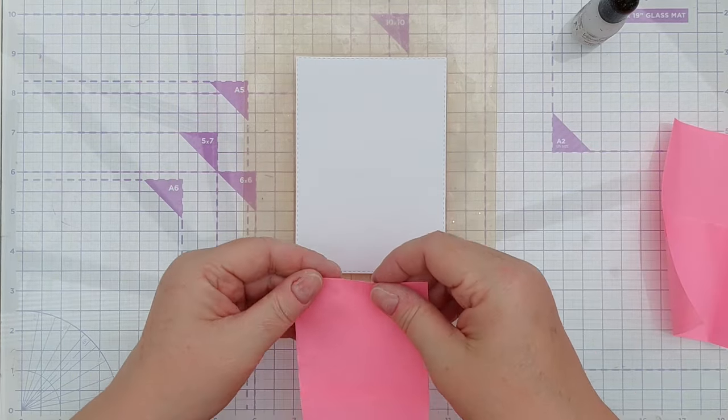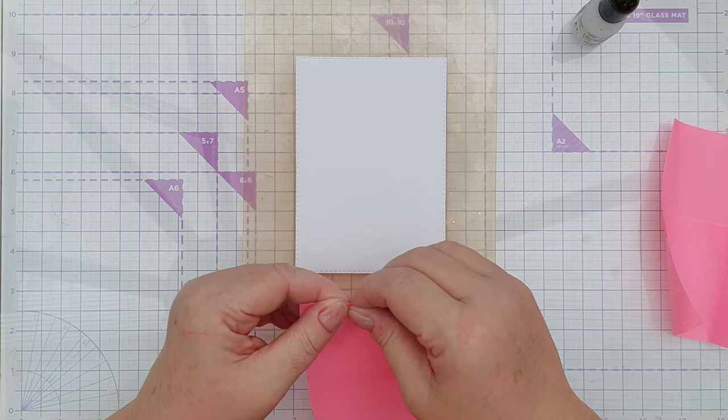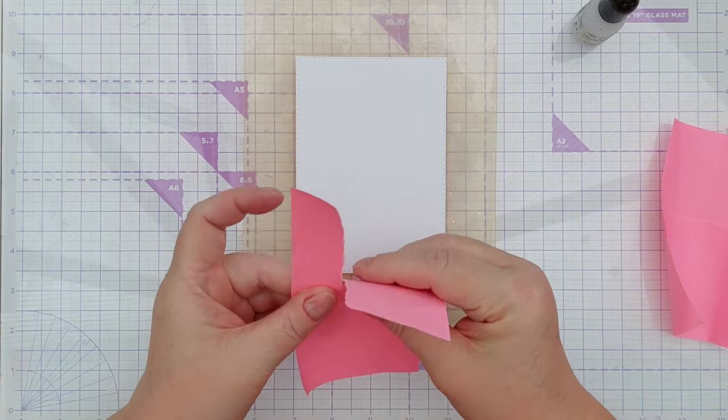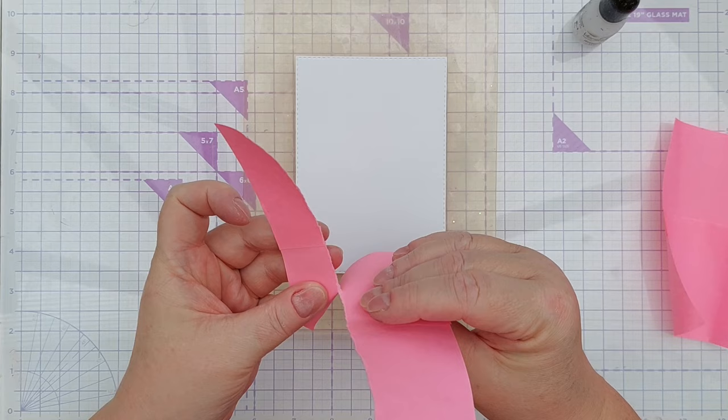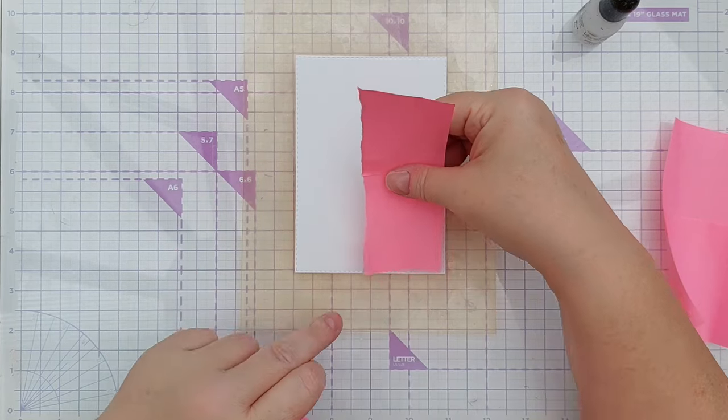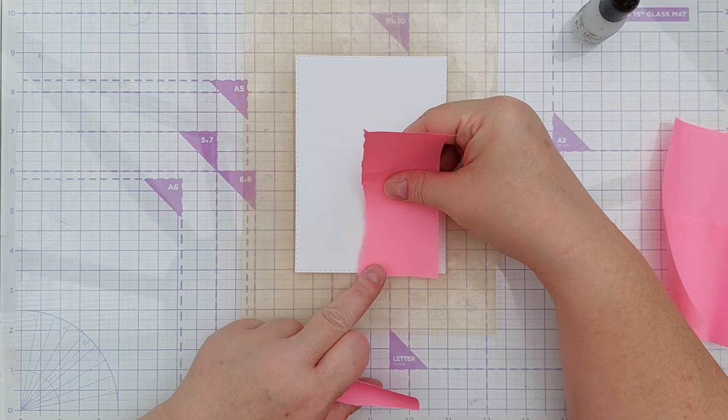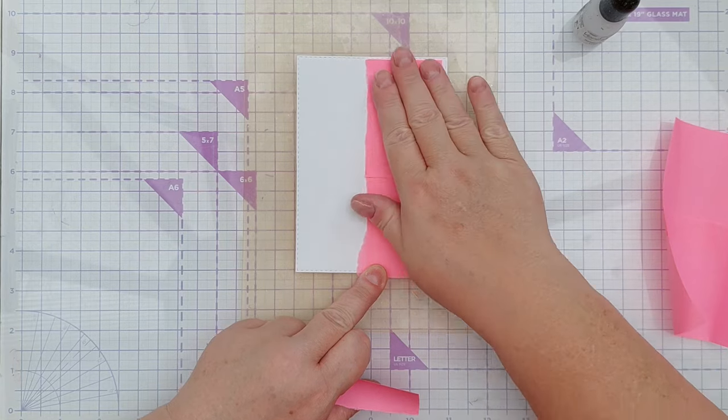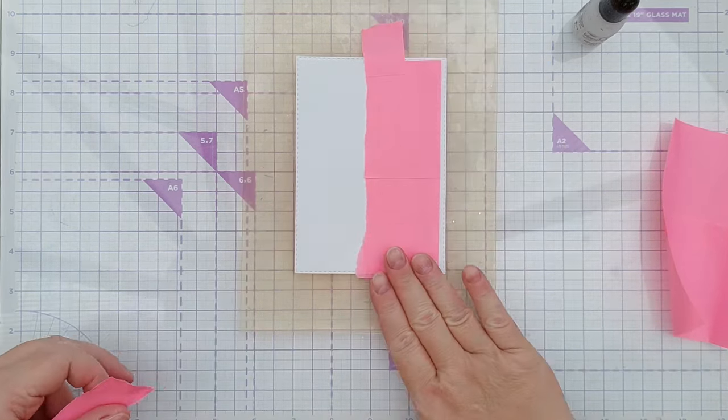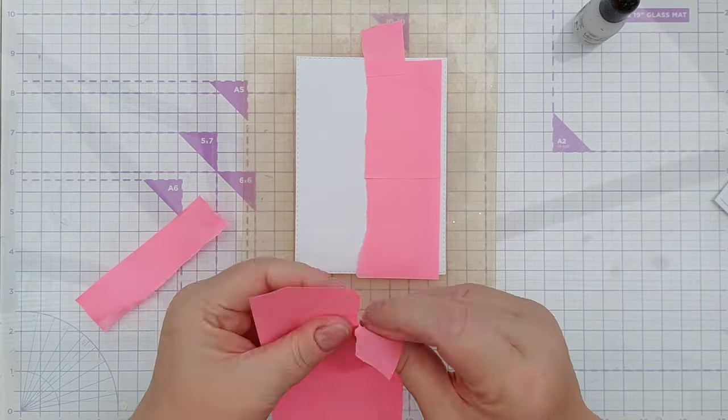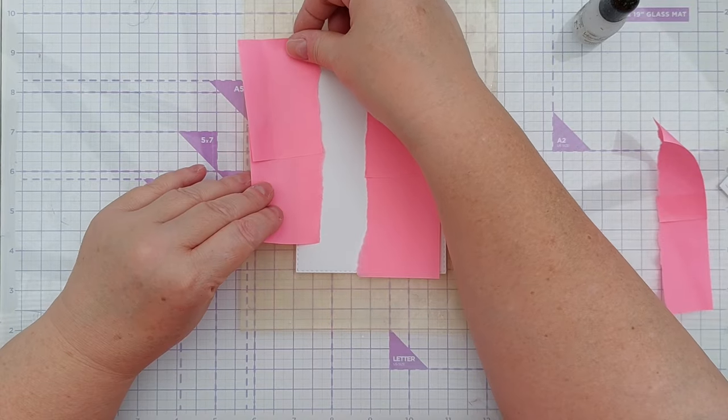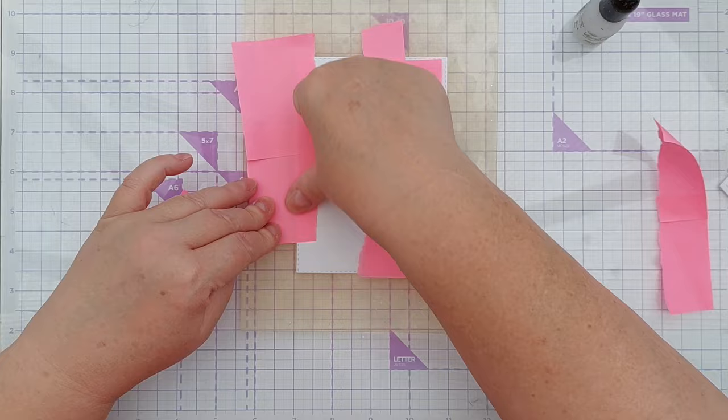And then I've got two sticky notes here and I'm going to tear a torn edge and mask off this side of the card here and this side of the card here.